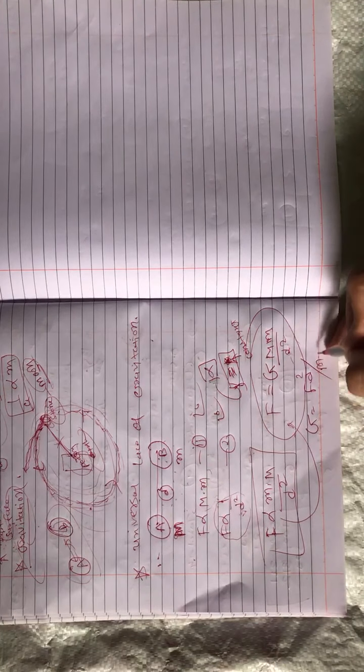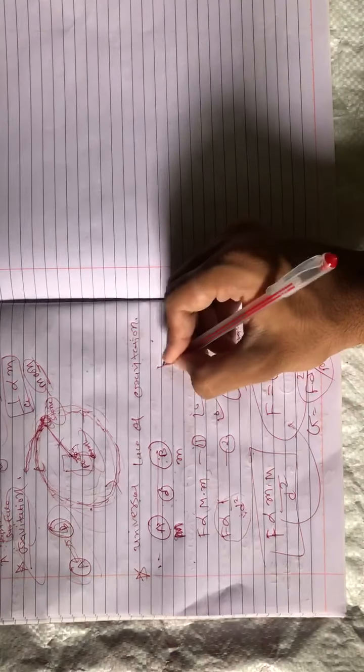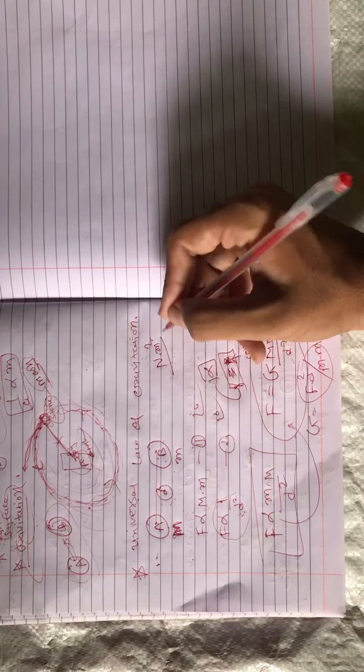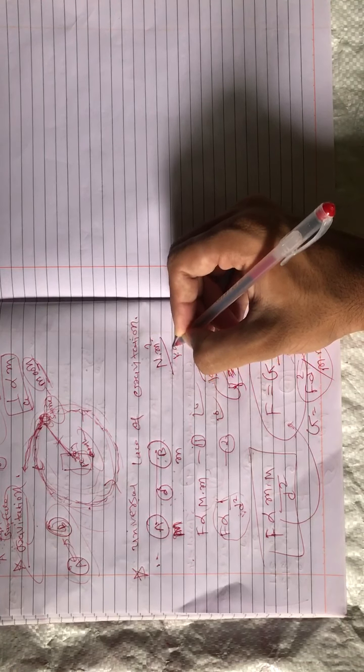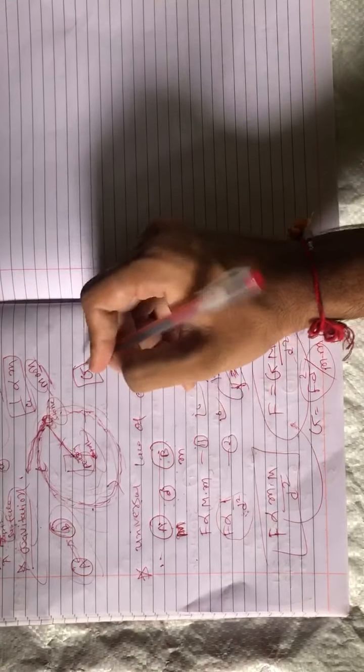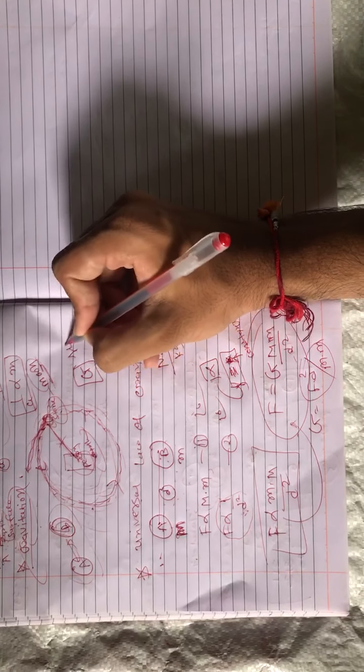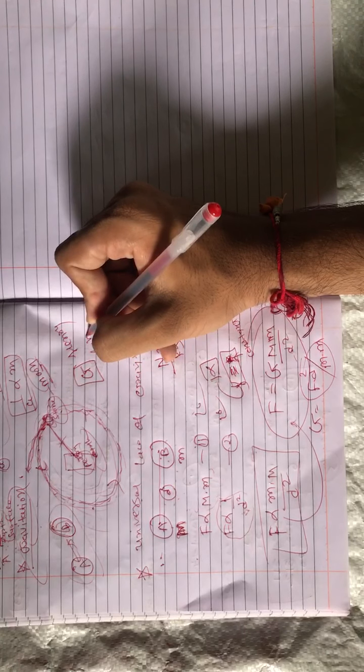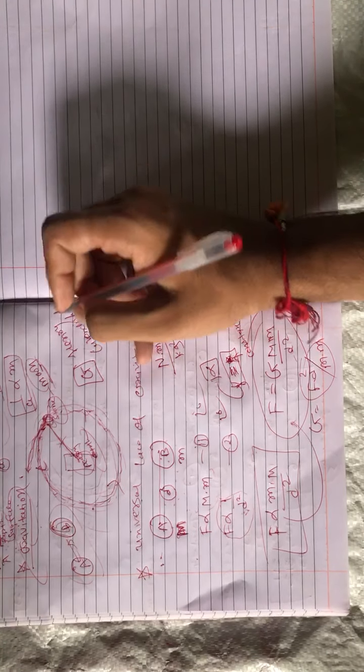This is the universal law of gravitation: F = GmM/d². The SI unit of G can be derived from the formula: G equals F times d squared divided by m times M. The unit works out to N·m²/kg². The value of G was found experimentally by scientist Henry Cavendish.